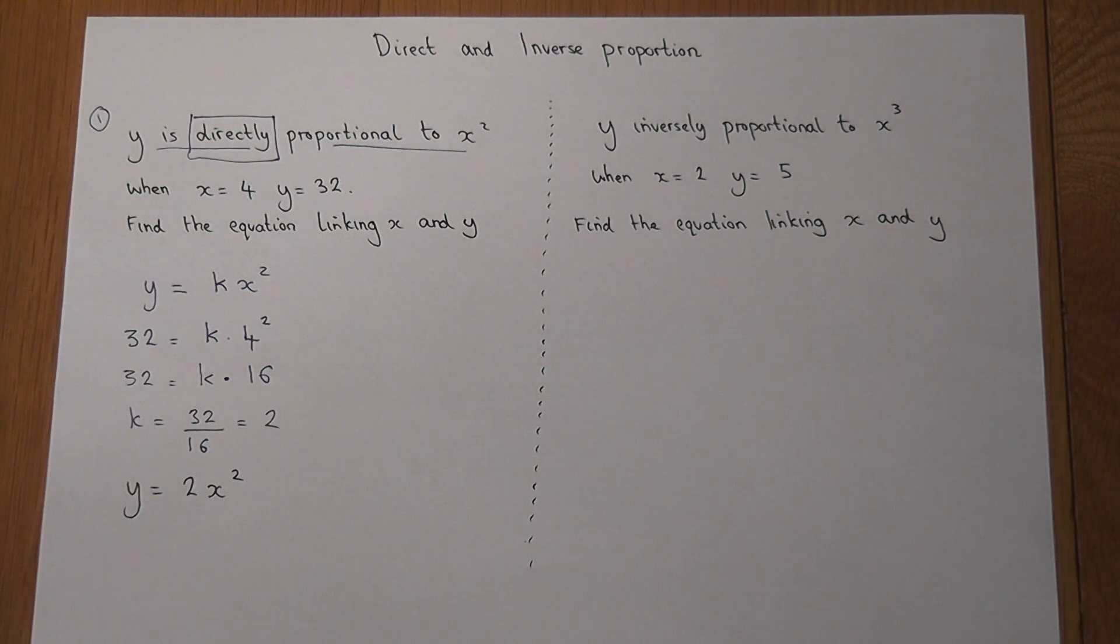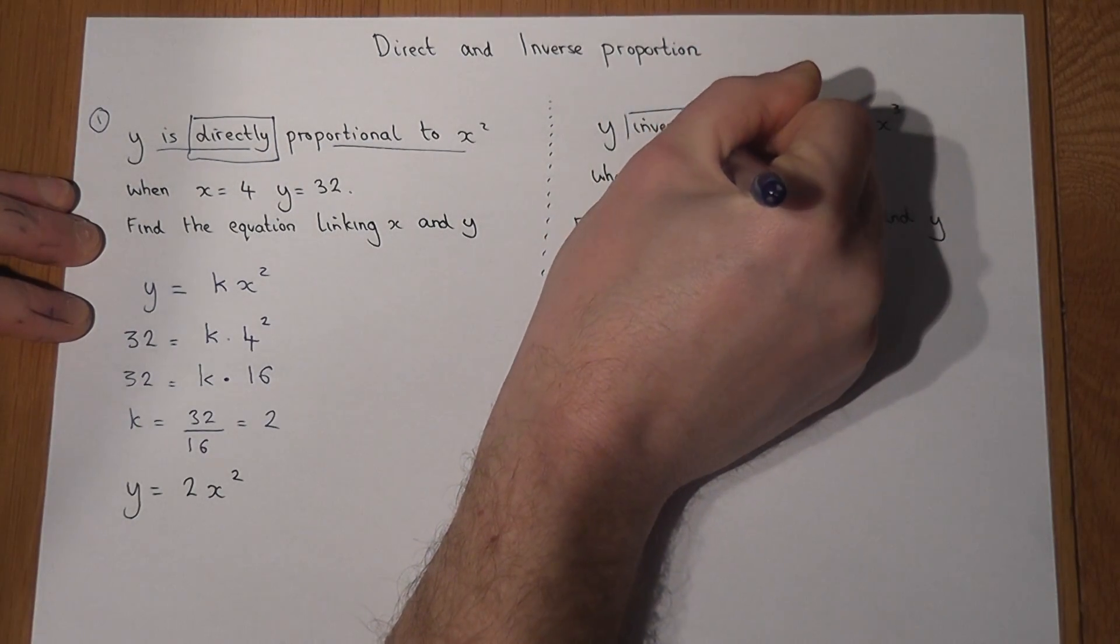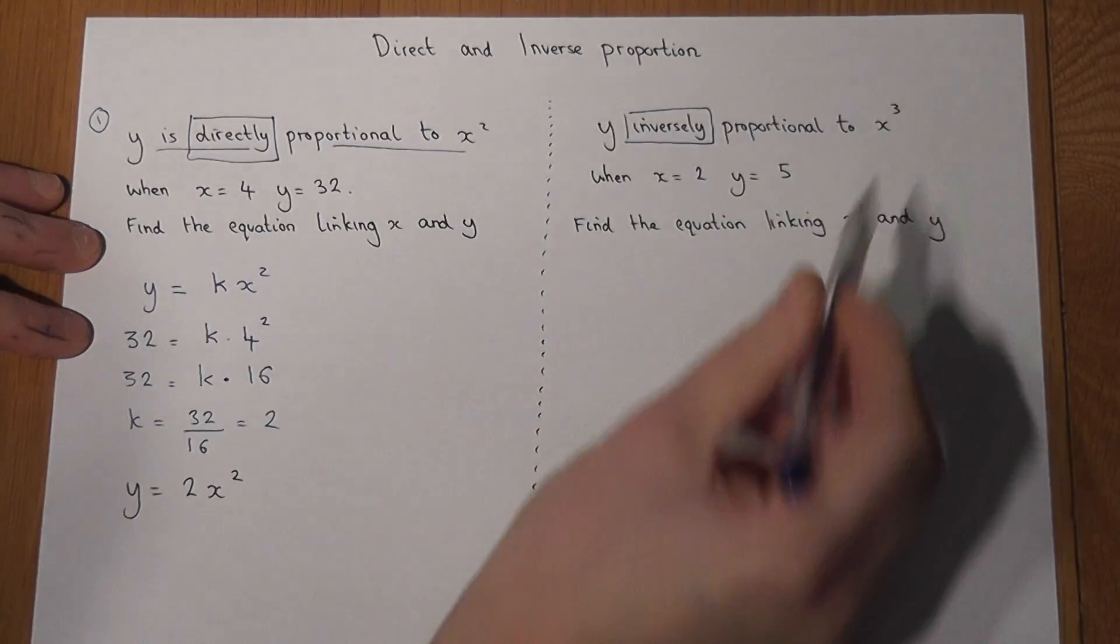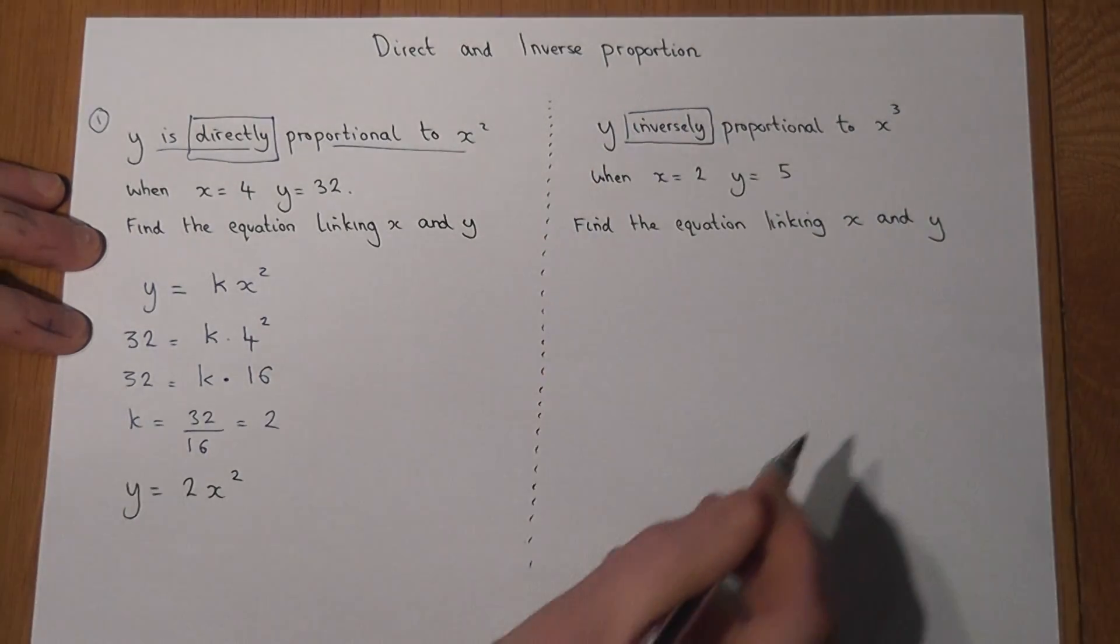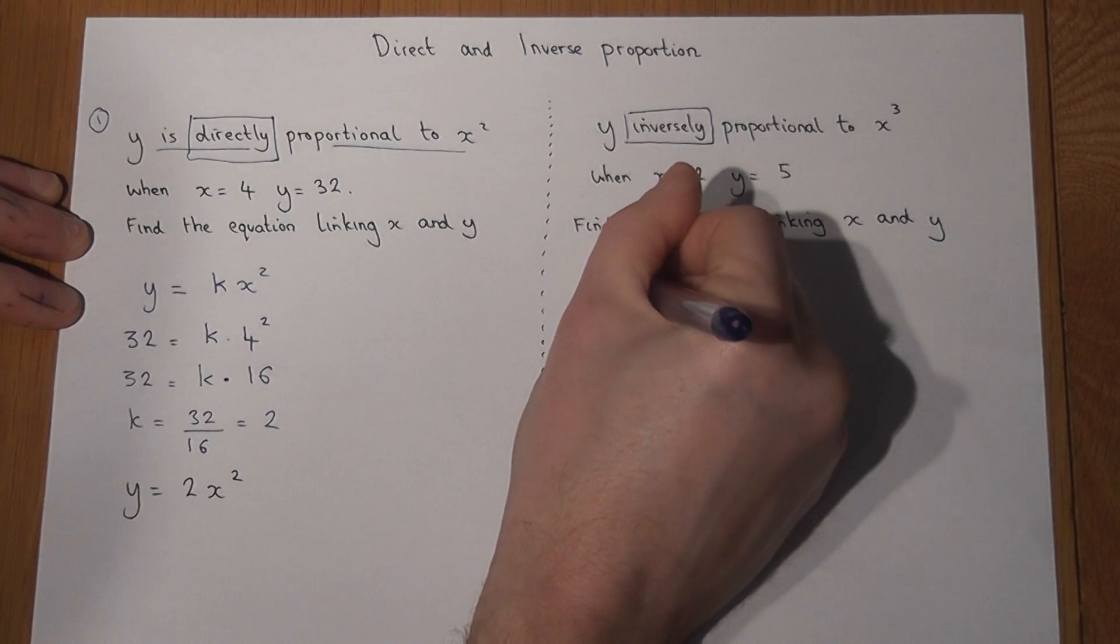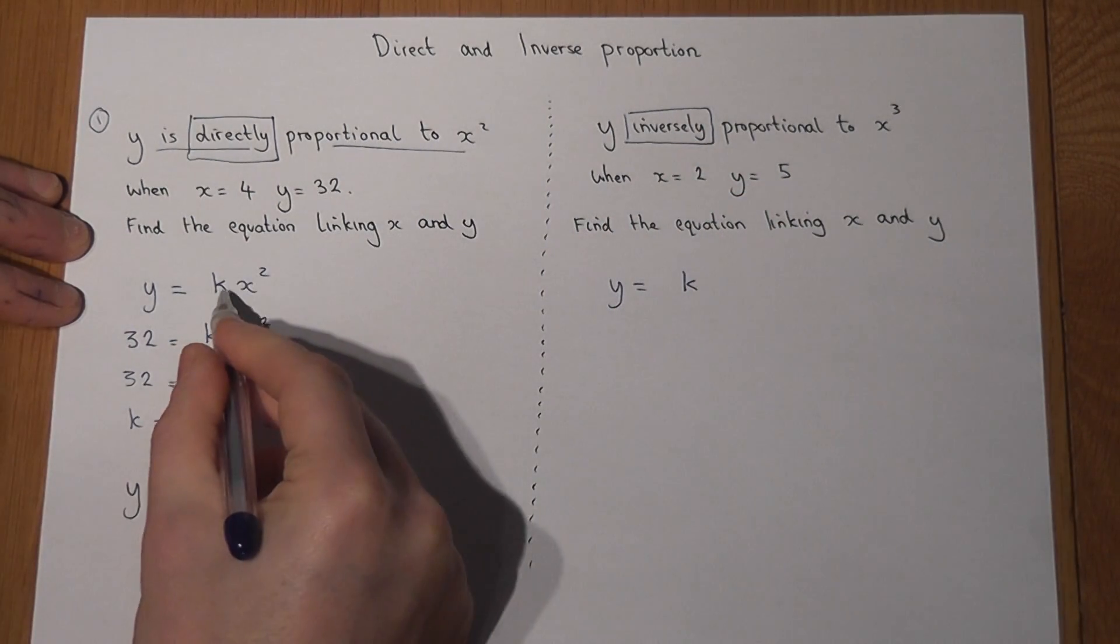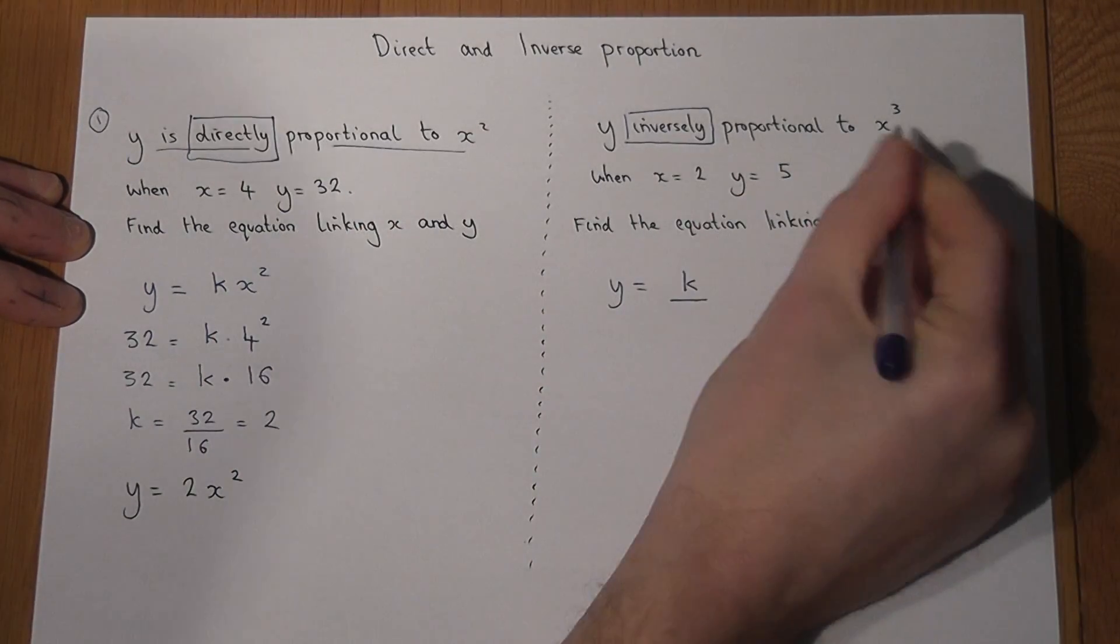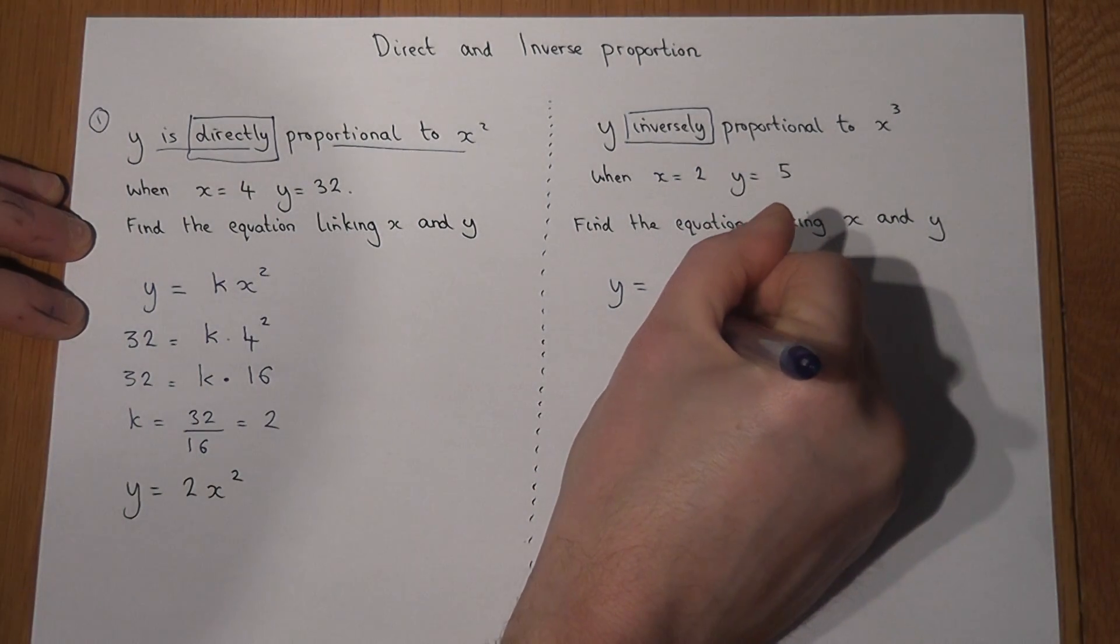In the second example, there's the word inverse, and we're told y is inversely proportional to x cubed, and again some values to use to find the equation. Now inverse just means a subtle variation on this equation: y is still k, but rather than times x squared or whatever the power is, it's over this expression here. So y is k over or divided by x cubed.